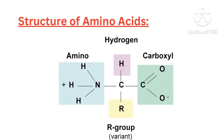Chirality of amino acids. Most amino acids, except glycine, have a chiral alpha carbon, leading to two possible isomers: L and D forms. L-amino acids are found in proteins and are predominant in nature. D-amino acids are found in bacterial cell walls and some antibiotics. Glycine is non-chiral because its R group is a hydrogen atom.